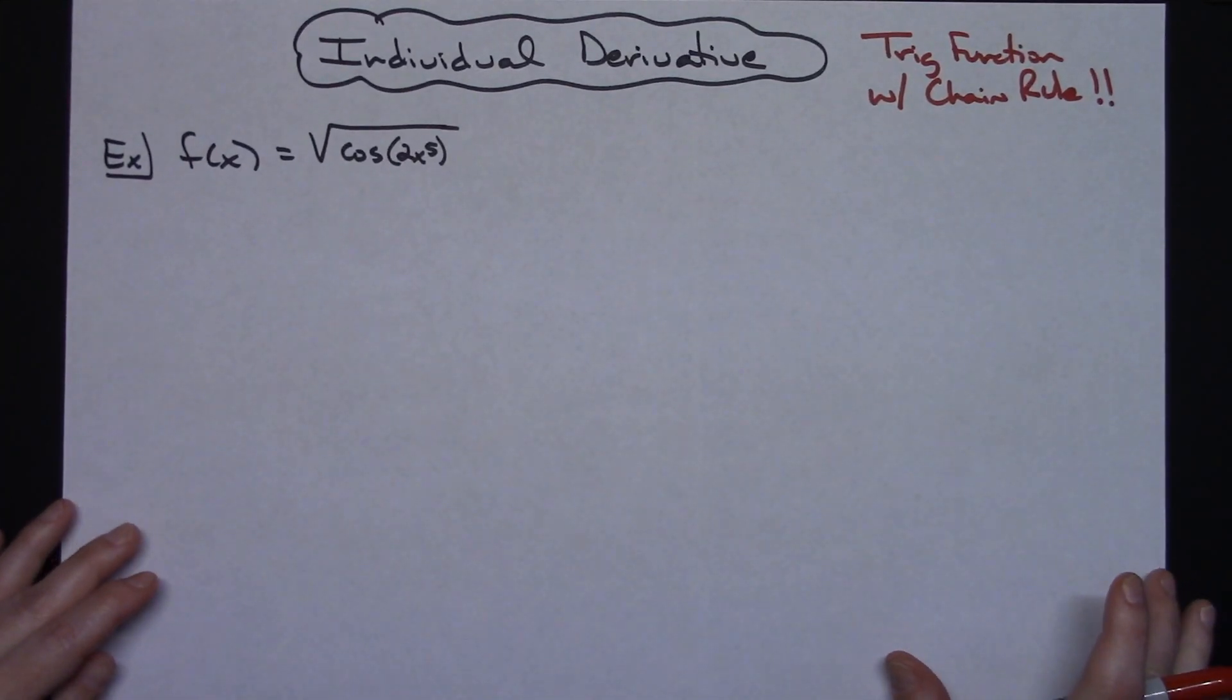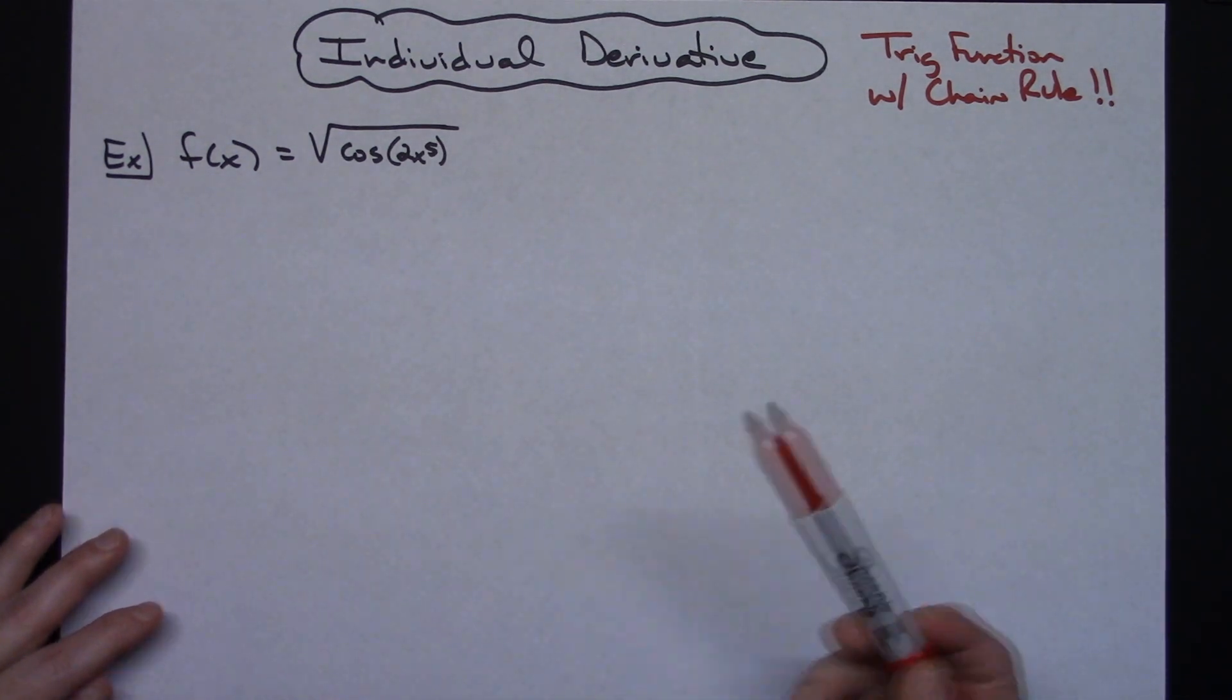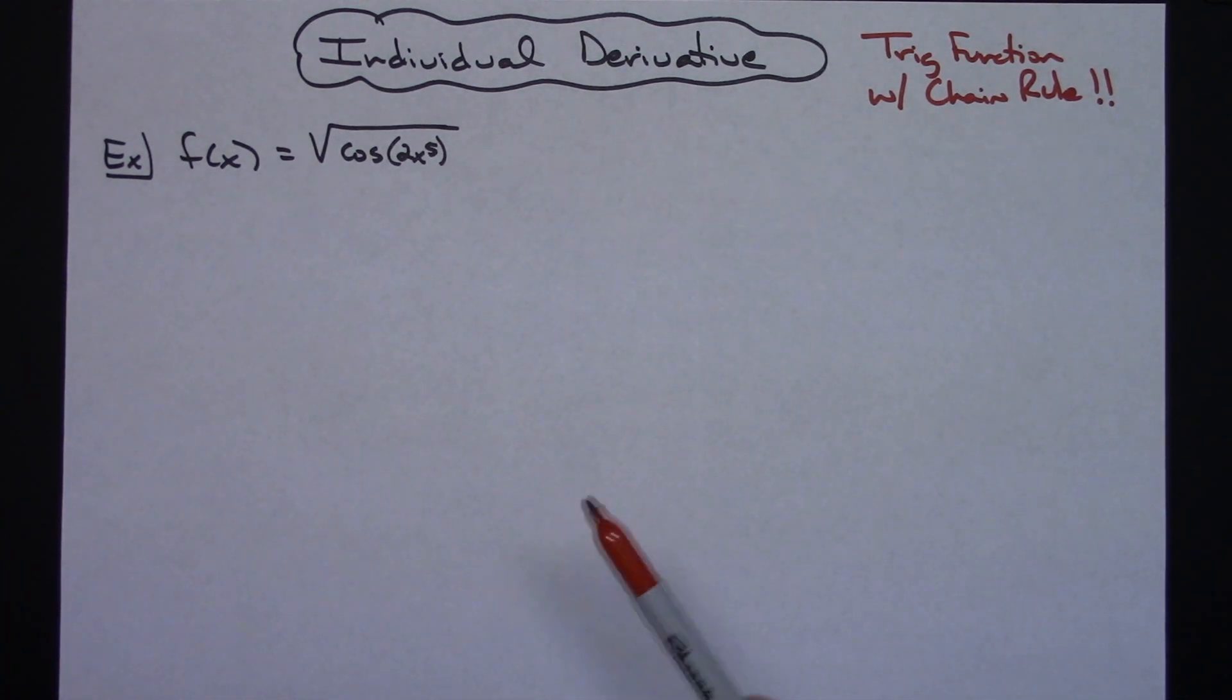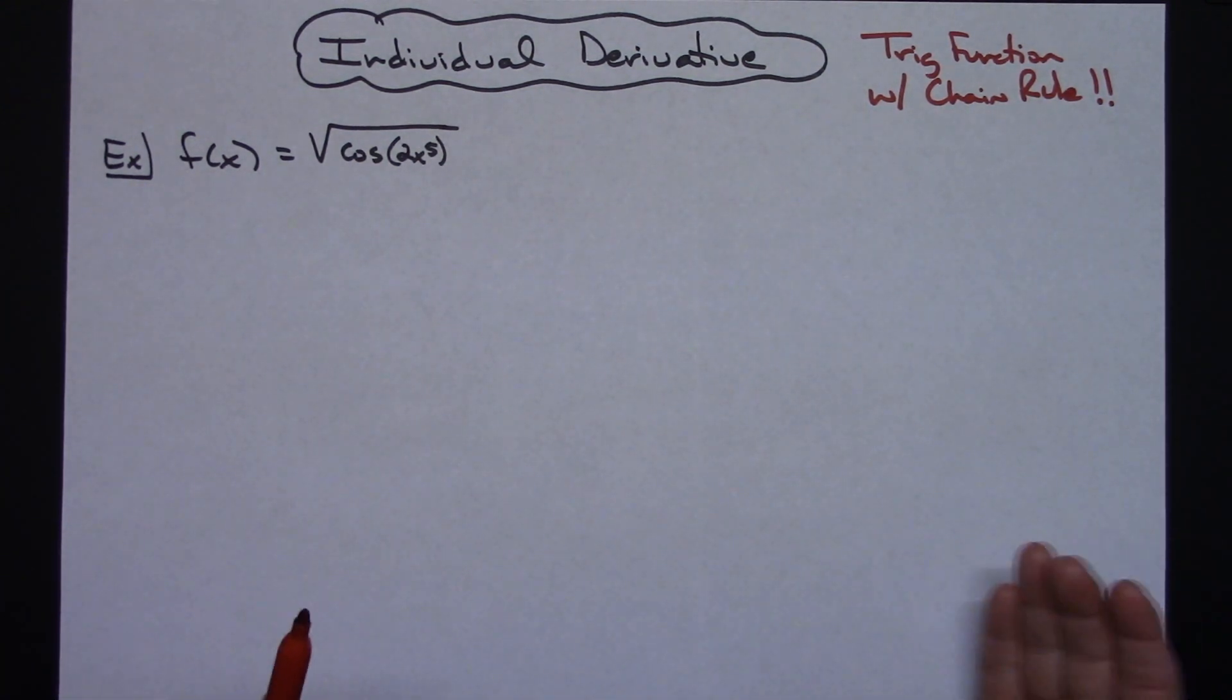In this video I'm going to work out an individual derivative. It is going to be one that involves a trig function and we are going to have chain rule. I am also going to use the DDX notation so that it clearly shows where each one of the chain rules is going to be applied.